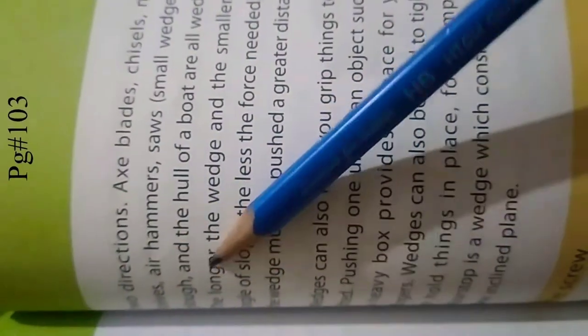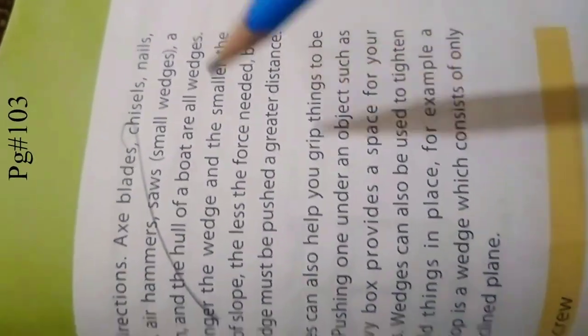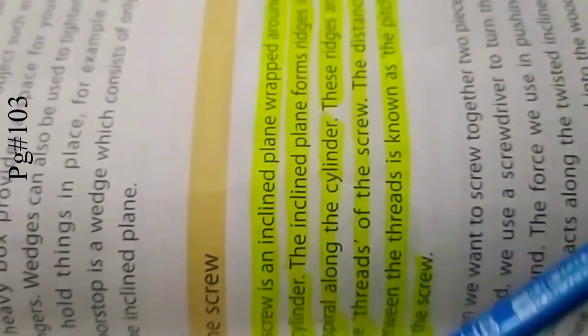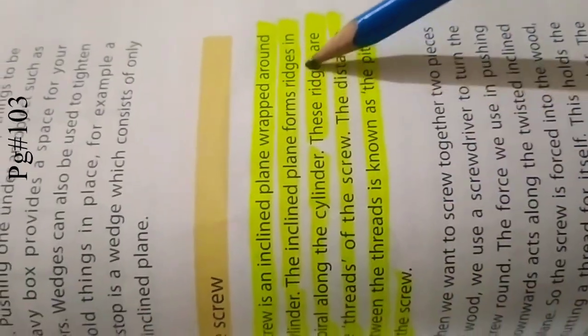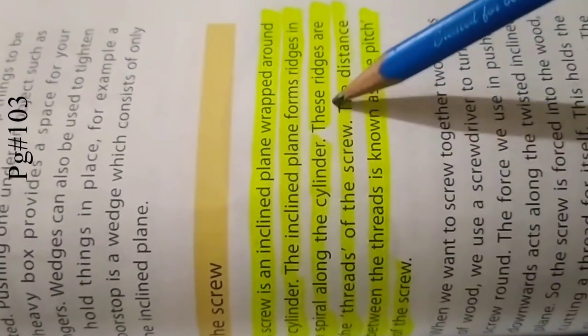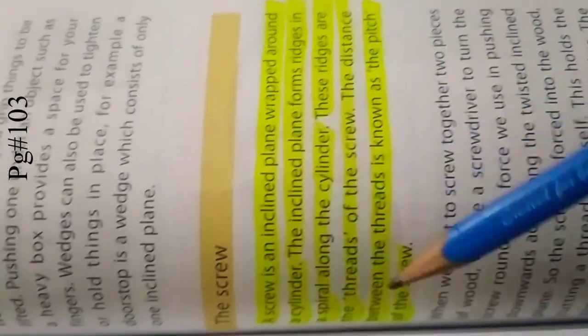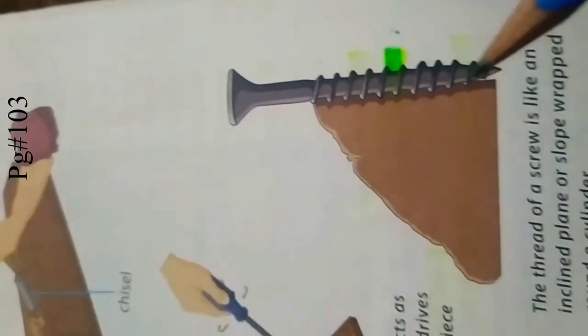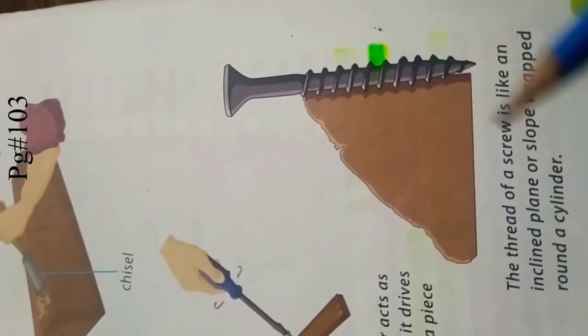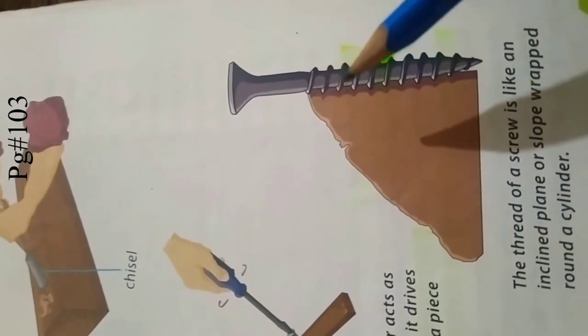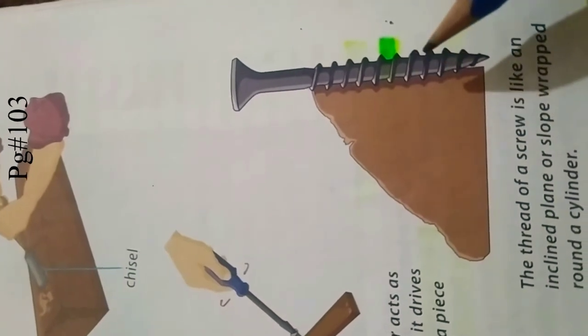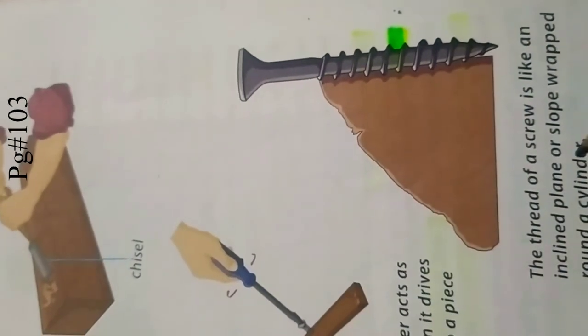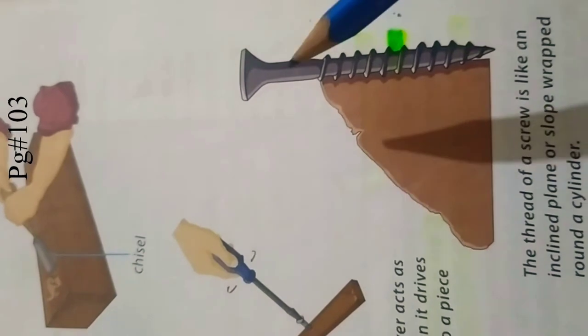Now we will study the screw. A screw is an inclined plane wrapped around a cylinder. The inclined plane forms the ridges in a spiral along the cylinder. These ridges are the threads of the screw. The distance between the threads is known as the pitch of the screw. Now you can see that it is also explained here that the thread of a screw is like a staircase. Haven't I told you that inclined planes are staircase too? So these are the inclined planes. The threads of a screw is like an inclined plane or slope wrapped around a cylinder. This is a cylinder and these threads are inclined planes wrapped around it.